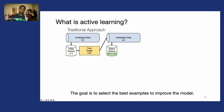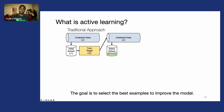We can then select the examples that are the most informative or valuable to label, expand our labeled set, and repeat the process. We train a new updated model on the better data and apply it to all unlabeled data, selecting the best examples to label.